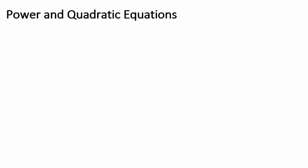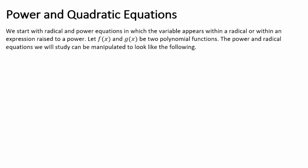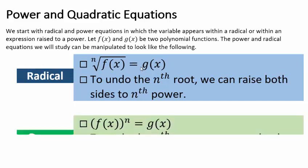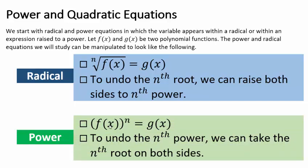For power and radical equations with polynomial functions f and g, we can convert all power and radical equations by manipulating both sides. For a radical equation, make it look like the nth root of f of x equals g of x, then raise both sides to the nth power to undo the root. You must go back and check your answers, because if g of x has negative values and you raise to an even power, you may lose information. For a power function, manipulate it to look like f of x to the nth power equals g of x, then take the nth root on both sides.